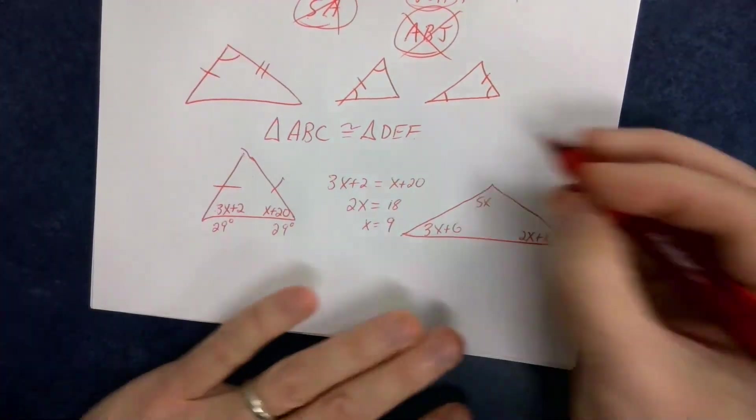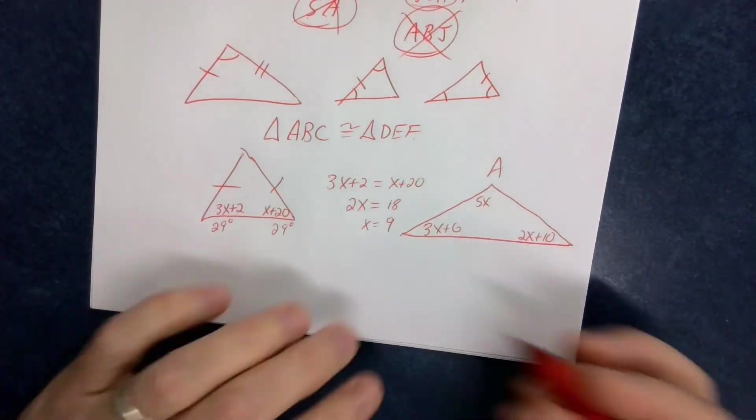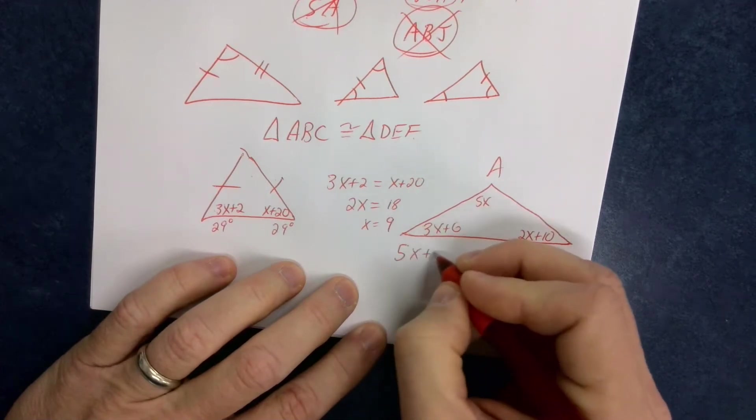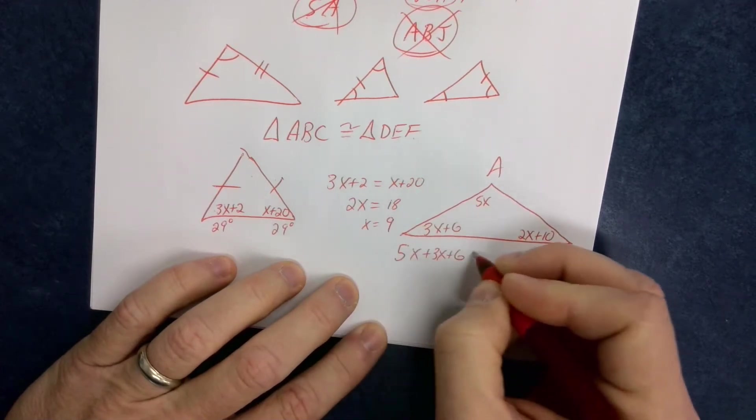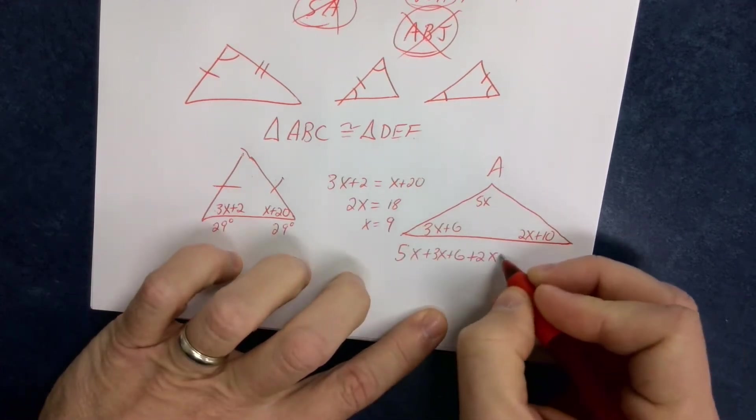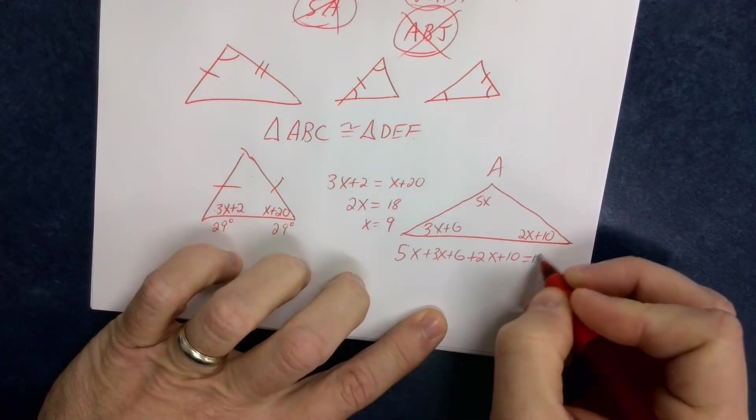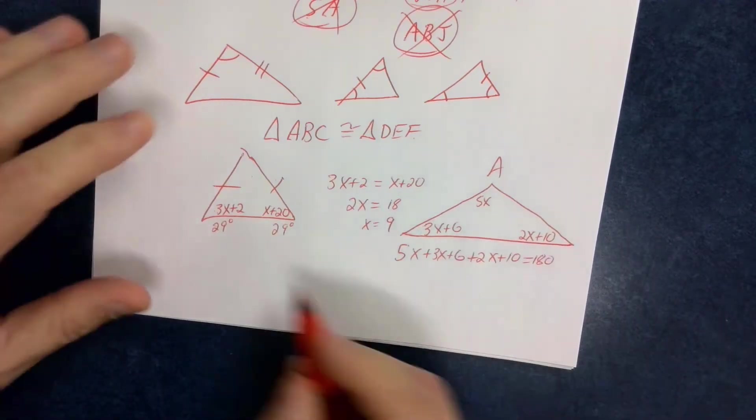and I say, hey, what's the measure angle A? Well, then you'd have to write 5x plus 3x plus 6, plus 2x plus 10 equals 180 degrees, and do some algebra that way.